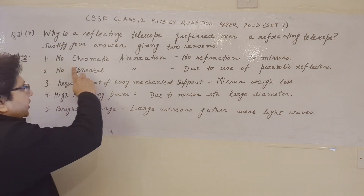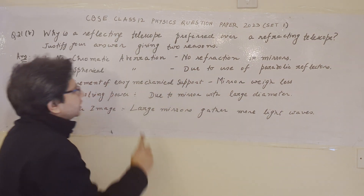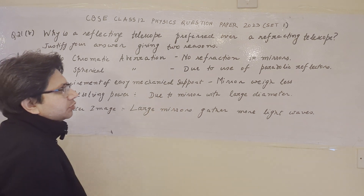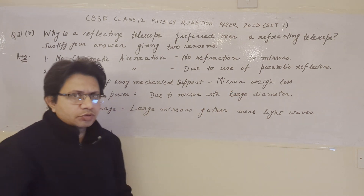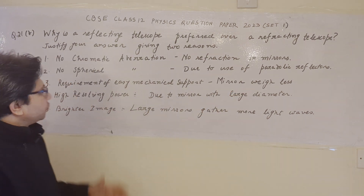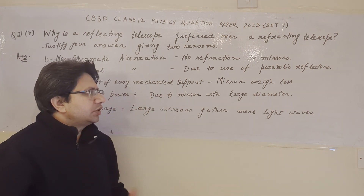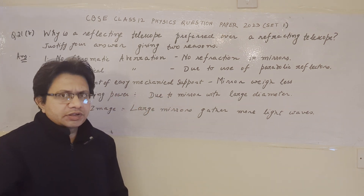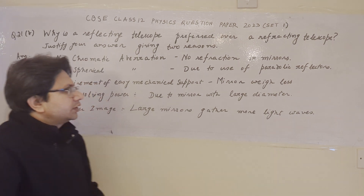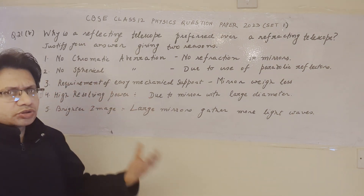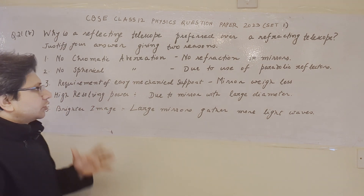To recap: the first reason is no chromatic aberration. The second reason is no spherical aberration, because in reflecting telescopes we can form a parabolic reflector. The third reason is easy mechanical support, since mirrors have less weight and remain stable in the frame. The fourth reason is high resolving power.